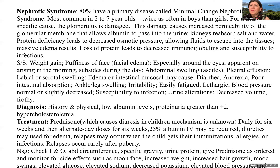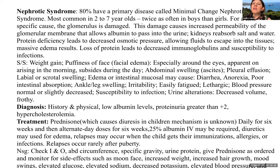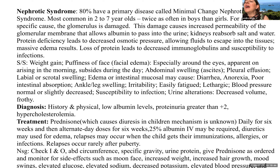Nephrotic syndrome: 80% have a primary disease called minimal change nephrotic syndrome, most common in two to seven-year-olds and twice as often in boys. For a nonspecific cause, the glomerulus is damaged, causing increased permeability of the glomerular membrane that allows albumin to pass into the urine — essentially you are peeing out your protein. The kidneys reabsorb salt and water. Protein deficiency leads to a decrease in osmotic pressure, allowing fluids to escape into tissues, resulting in massive edema — this is third spacing. Loss of protein leads to decreased immunoglobulins, increasing susceptibility to infections.